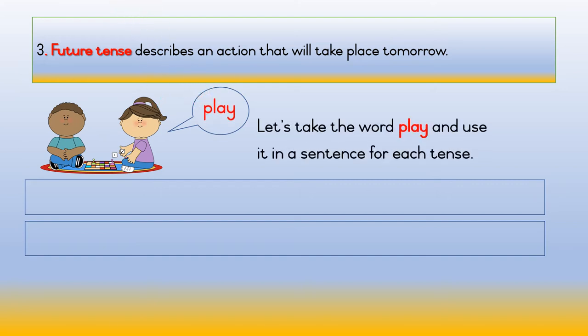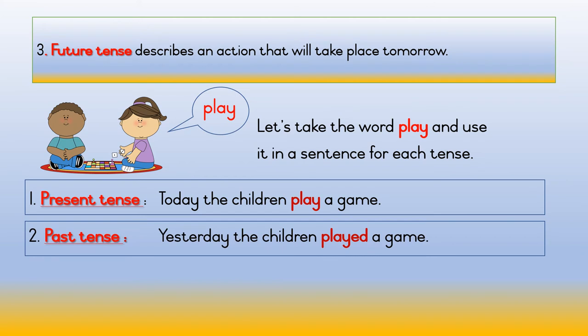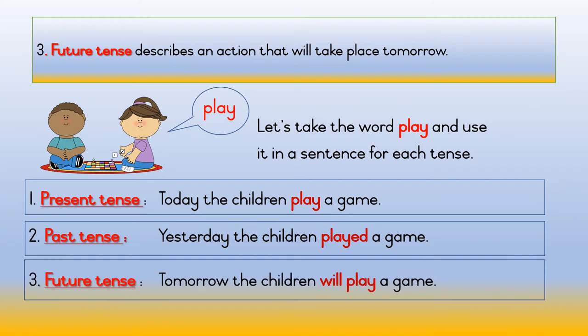Let's take the word 'play' and use it in a sentence for each tense. Number one, present tense: Today the children play a game. Number two, past tense: Yesterday the children played a game. Number three, future tense: Tomorrow the children will play a game.